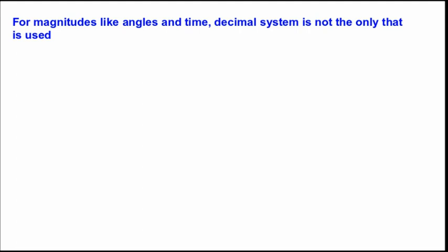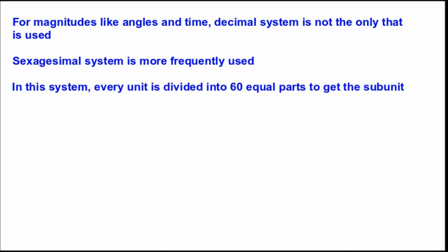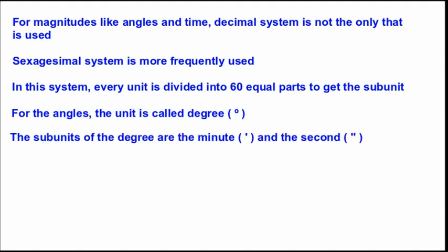Now we are going to learn about the decimal-sexagesimal system for magnitudes like angles and time. The decimal system is not the only one used; the sexagesimal system is more frequently used in those cases. In this system, every unit is divided into 60 equal parts to get the subunit. For angles, the unit is called degree, with subunits of minutes and seconds.